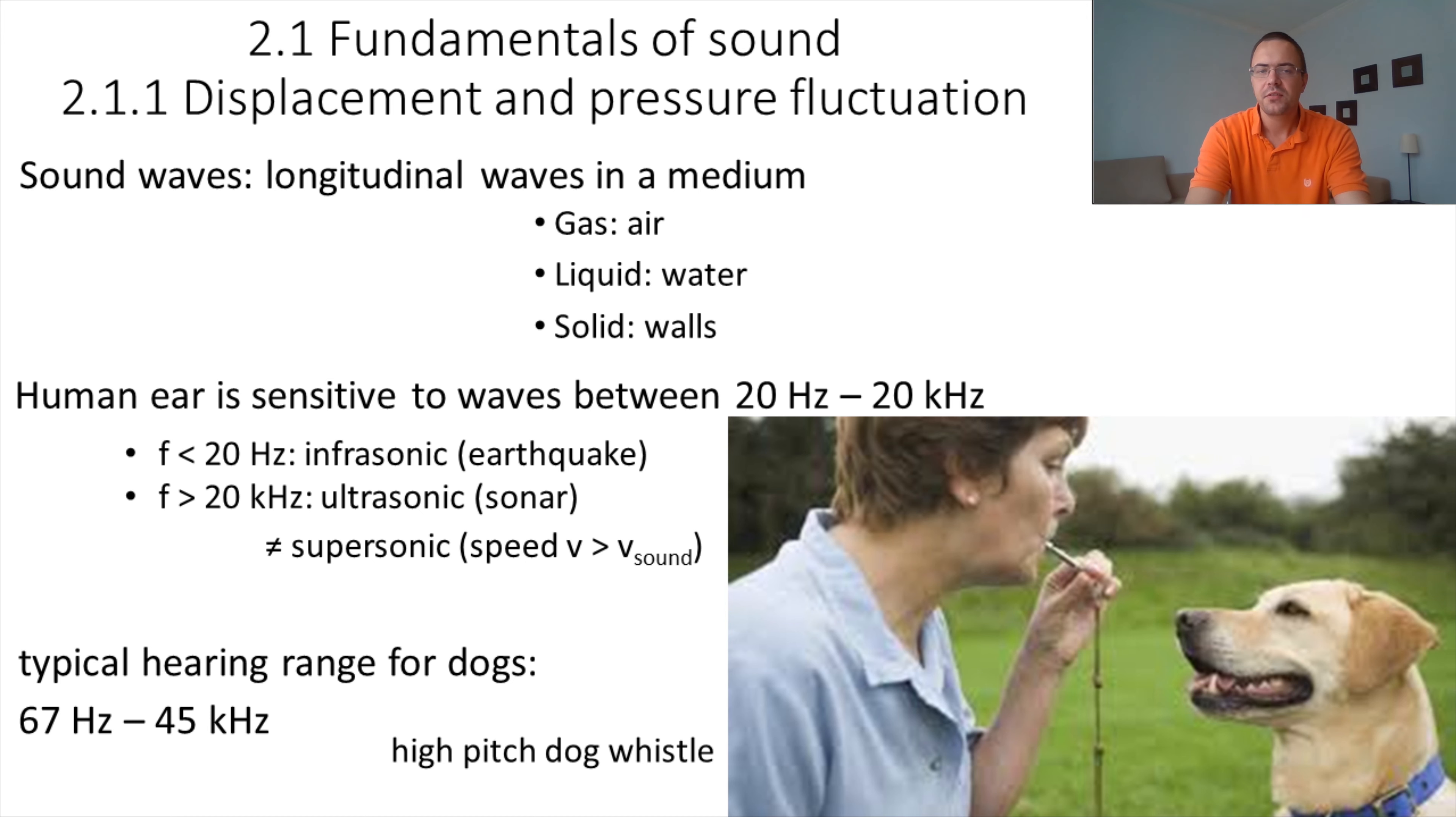Our human ear is sensitive to waves between 20 Hz and 20 kHz. There are sound waves that we cannot hear. Below 20 Hz, they are called infrasonic waves, for example, seismic waves. And above 20 kHz, they are called ultrasonic waves, for example, the waves from a sonar.